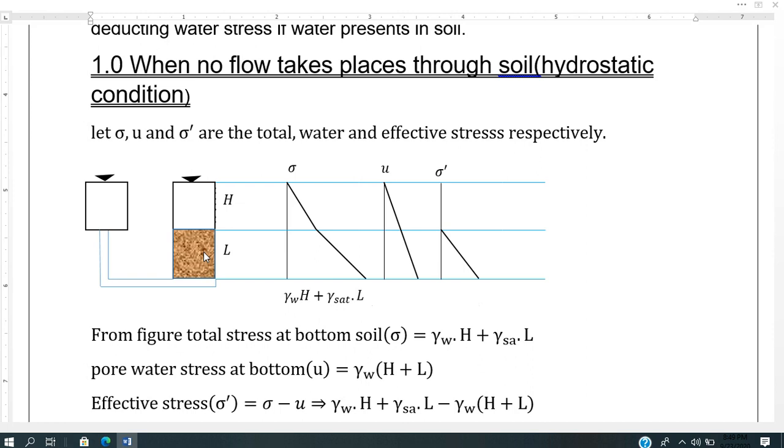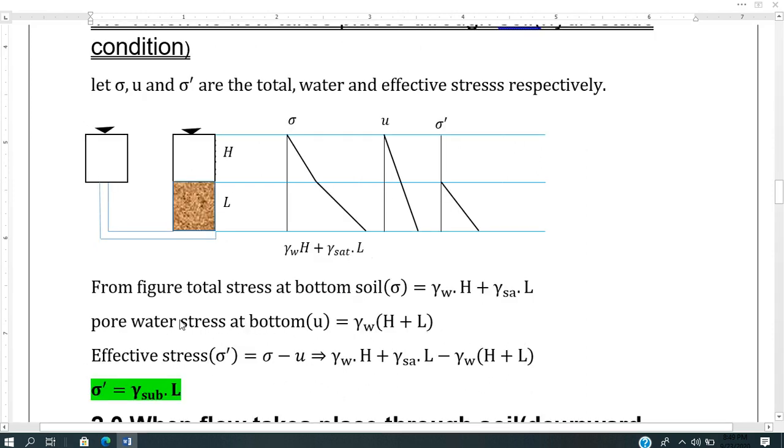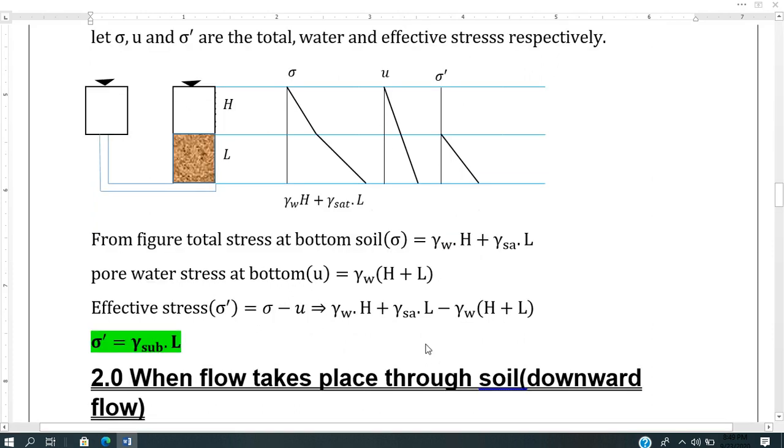Total pressure at the bottom of the soil sample equals water pressure plus saturated soil pressure. From effective stress, one gets total pressure minus pore water pressure. So sigma dash equals gamma submerged times the length of soil.